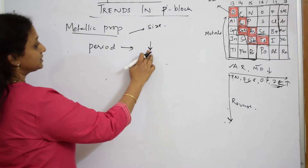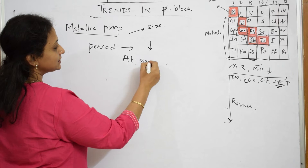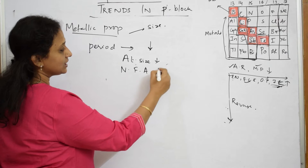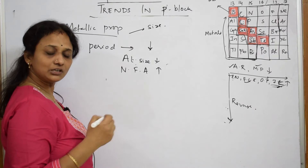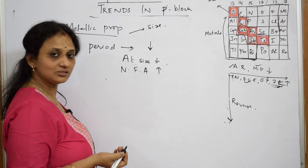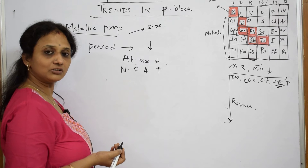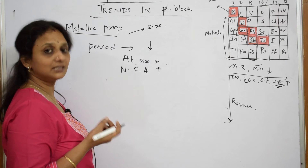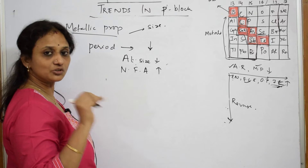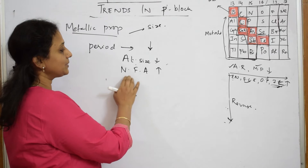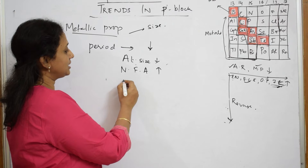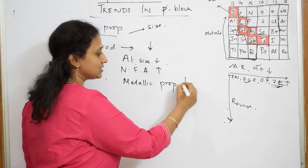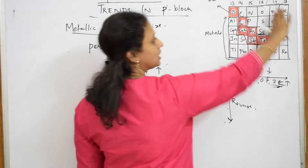Why? Because atomic size is decreasing, and nuclear force of attraction increases. When nuclear force of attraction increases, it can't easily donate electrons. When it can't donate electrons, the non-metallic property increases. Metallic means it has to release electrons, but here the nucleus is trying to pull the outermost electron. Hence, metallic property decreases — that's why all are non-metallic.